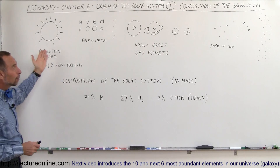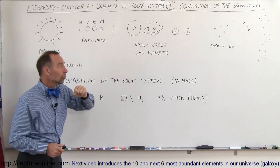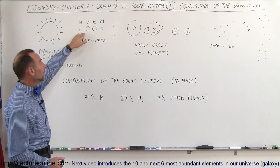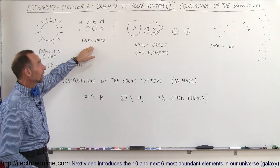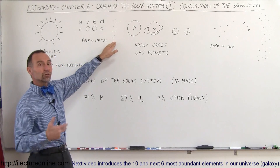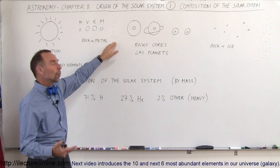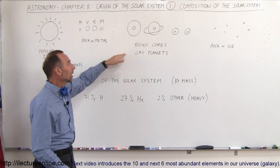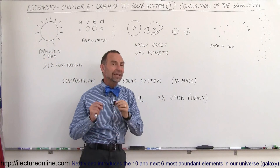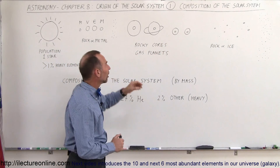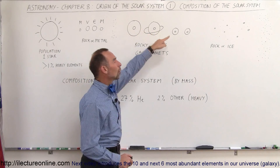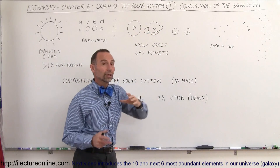When we look at the planets in the solar system, the first four are made out of rock and metal — the terrestrial planets. We have the asteroid belt, which is mostly made out of rock and some metal. And then we have the gas planets, but even the gas planets are thought to have a fairly large rocky core.